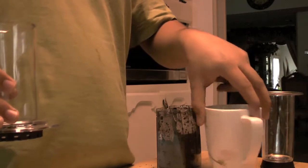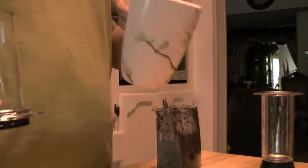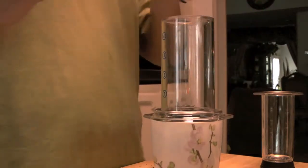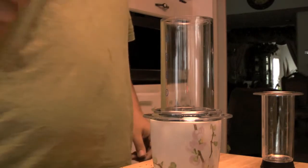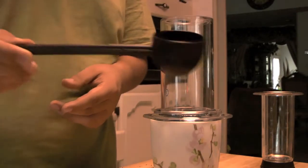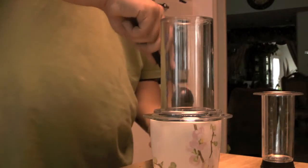You're gonna use a regular coffee cup. Now we have the filter and what we're gonna do is scoop with the aero press scooper, not any other scooper, the aero press scooper. We're gonna get two scoops of delicious ground coffee.